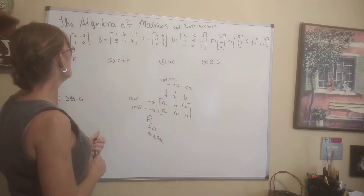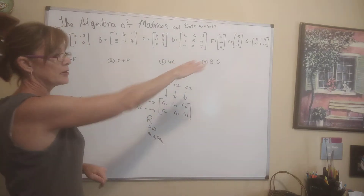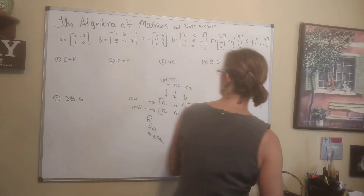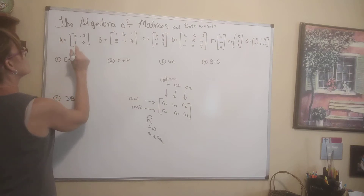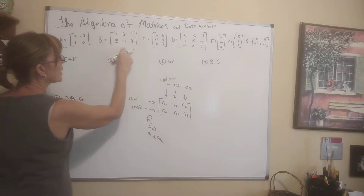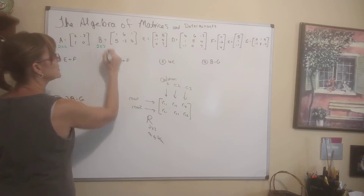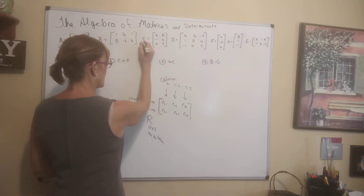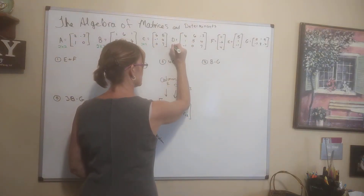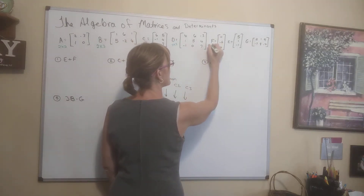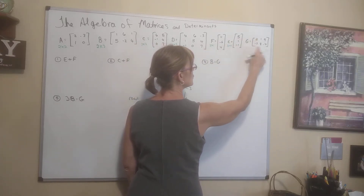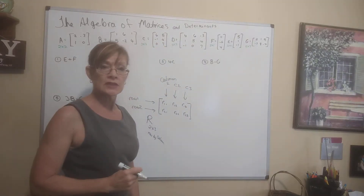Let's discuss the size of each matrix. Matrix A has 2 rows by 2 columns — it's 2 by 2. B is 2 by 3. Matrix C is 3 by 2. Matrix D is 3 by 3. F is 3 by 1. E is also 3 by 1. And G is 2 by 3.